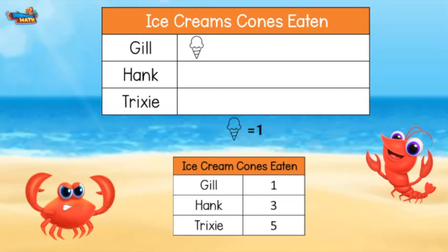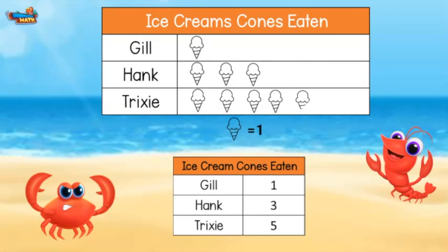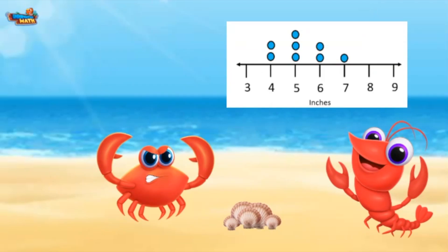Hank ate a few more — he will have 3 by his name. Trixie ate 5 ice cream cones, so she will have 5 ice creams by her name. Great work! That moves us along to our final graph.